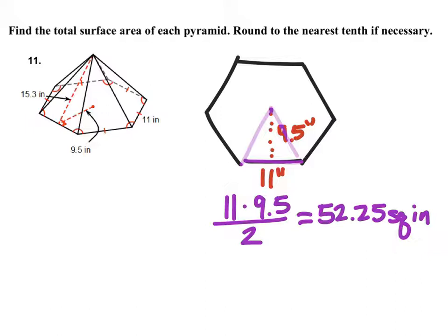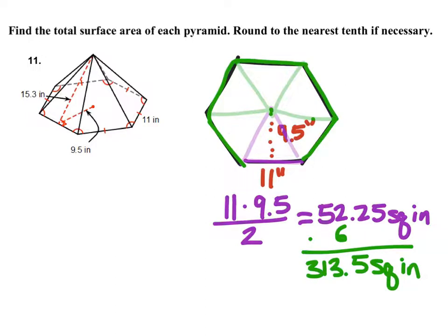Now the thing about this 52.25 square inches is it's just one triangle, right? However, we can see that the hexagon has actually been split up into six separate triangles, all of the same size by the way. So what that means is I can take this 52.25, multiply it by 6, and that will tell me the full area of the entire hexagon. When I put that in my calculator I get 313.5 square inches.